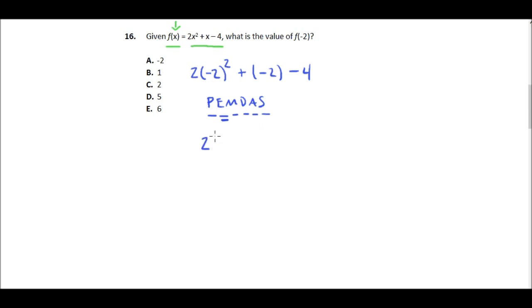So that would be 2 times 4 plus negative 2 minus 4, and now we can just do the rest of it. So now we can do the multiplication, so that's 2 times 4 is 8, plus negative 2 minus 4.